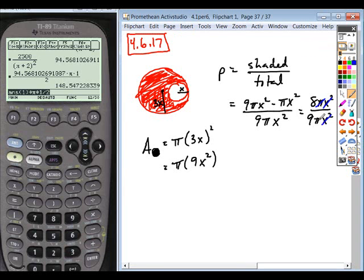And then I can cancel, cancel, and I have my probability. I have an 8 in 9 chance of choosing a point in the black.